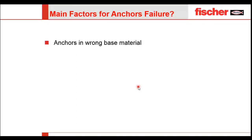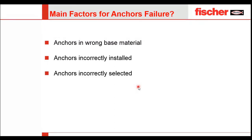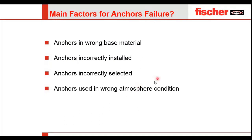The main factors for anchor failures are: anchors used in the wrong base material, anchors not correctly installed, anchors incorrectly selected or not appropriate for the application, anchors used in wrong atmospheric conditions, and anchors used without approvals. These are the most important factors that can cause anchor failure.